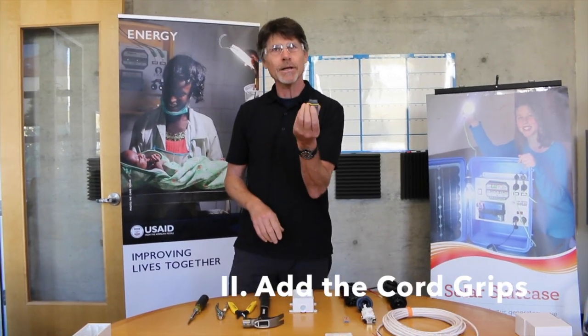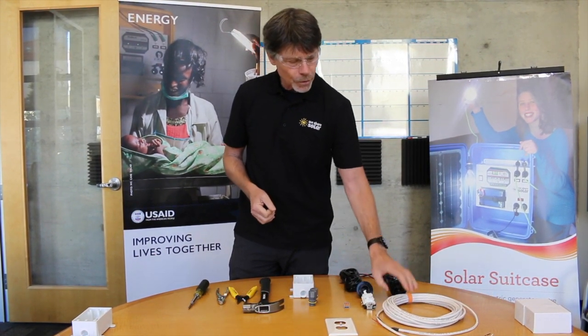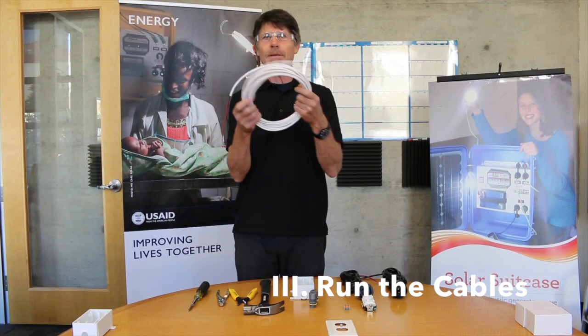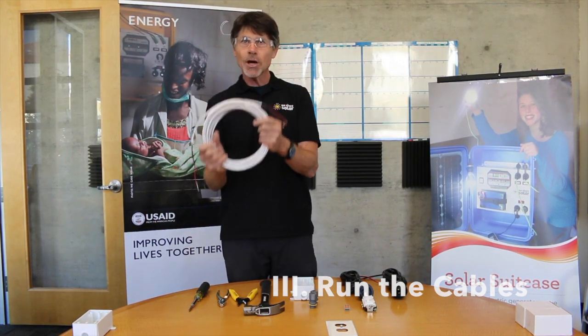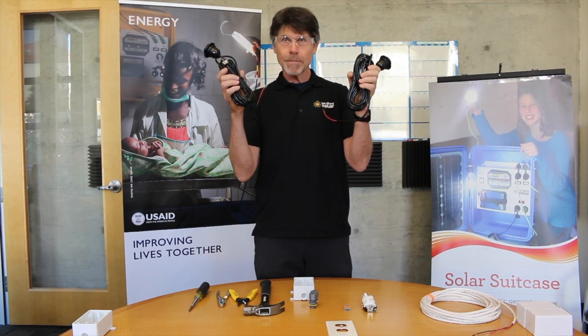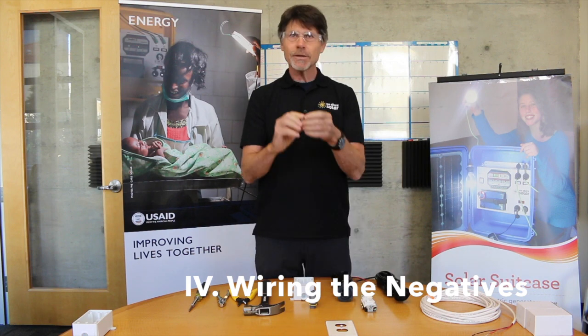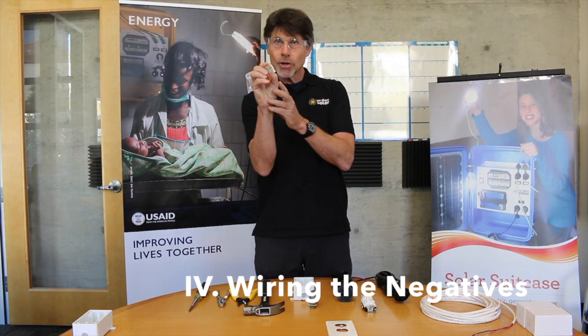Second, we're going to add the cord grips which will hold the cables. Third, we're going to run the cables. This is the power from the solar suitcase to the light switch box. And then these are the two lamp cords which will get powered by the switch.